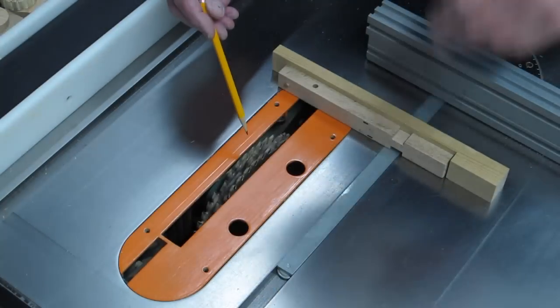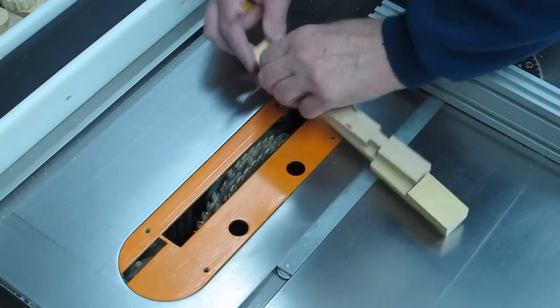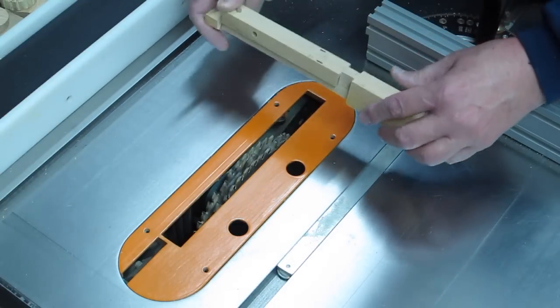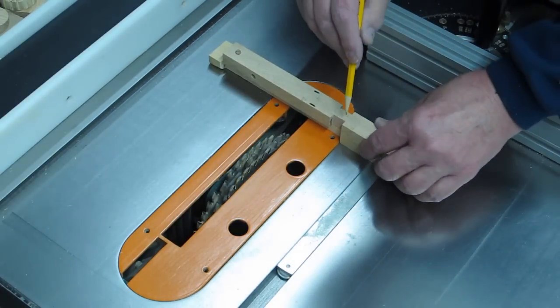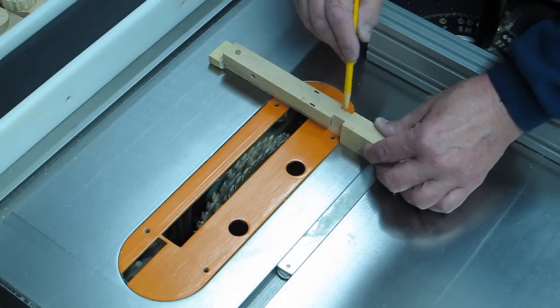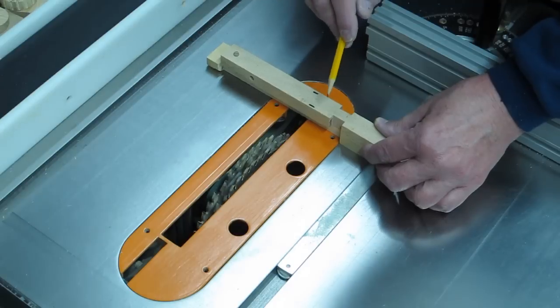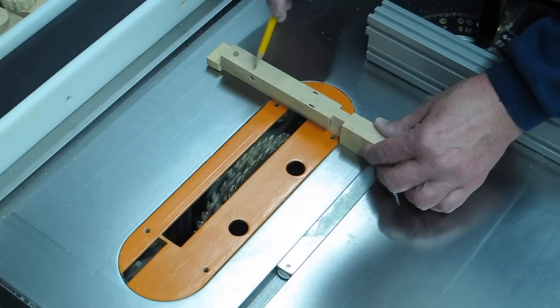I've installed dado blade on the table saw, made up a little jig to hold this key. We clamp this in and accurately cut the beginning of these notches on both sides, and now I'm going to go along and remove this excess material and end up with the notch for the black keys.